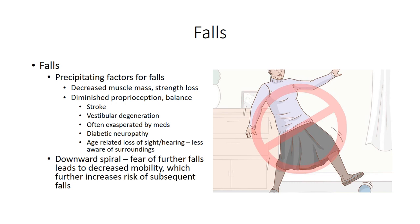A number of precipitating factors contribute to increased susceptibility to falls. The age-related loss in lower body strength makes it more difficult to correct balance during unstable moments. Neurological deficits, particularly involving the cerebellum, can negatively impact balance, and certain medications can do the same. Other sensory deficits such as hearing and sight loss, or the progression of dementia, impact awareness of surroundings, increasing susceptibility to tripping hazards. Previous falls can also limit mobility, resulting in further strength losses and even greater susceptibility to future falls.